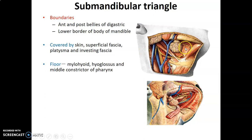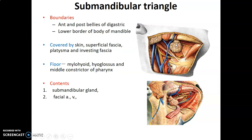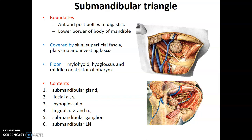The floor of the submandibular triangle is formed by the mylohyoid muscle, the hyoglossus muscle from the hyoid to the tongue, and the middle constrictor of the pharynx. The contents of the submandibular triangle include the submandibular gland, submandibular lymph nodes, submandibular ganglion, facial artery and vein, hypoglossal nerve (12th cranial nerve), and the lingual artery, vein, and nerve. The lingual and facial arteries arise from the external carotid artery.